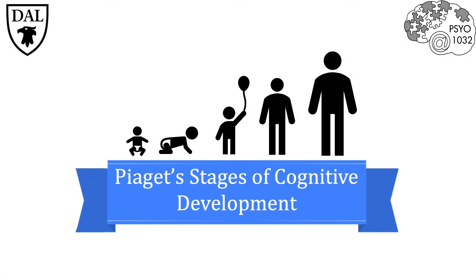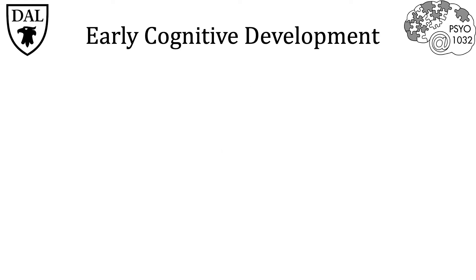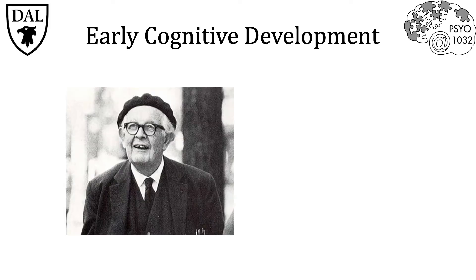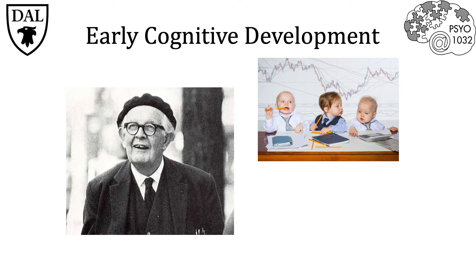This tricky topic discusses Piaget's stages of cognitive development, outlining his theories of early cognitive development in particular. Early cognitive development was extensively studied by Jean Piaget. He studied early infant and childhood advances in the ability to think, pay attention, reason, remember, learn, and solve problems.